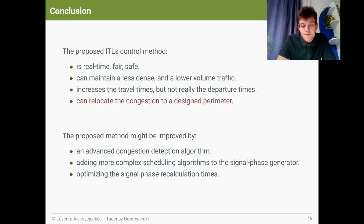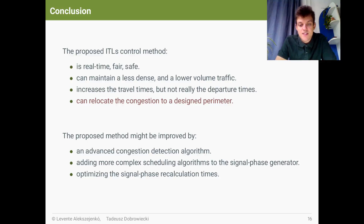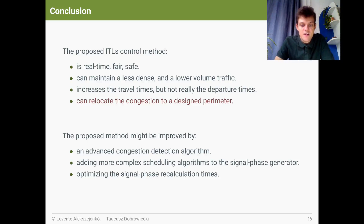As a conclusion, we proposed an ECN-based intelligent traffic light system which runs in real time and of which fairness and safety is mathematically guaranteed. This method can maintain a less dense, lower volume traffic in a sheltered zone, but it also increases the average travel times. Since departure times are not increased, waiting at the perimeter of the ECN-controlled zone is quite possible, therefore traffic jams can be relocated to a perimeter of the city, where they might cause less harm than in a city center or in residential areas.